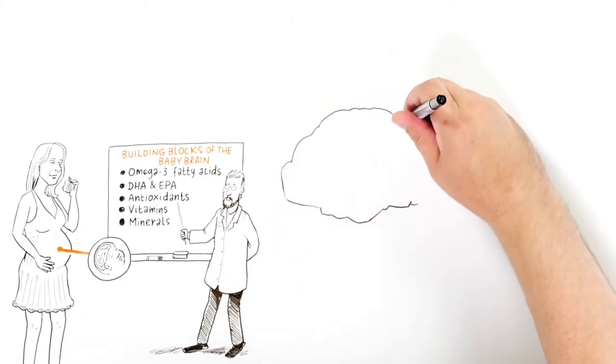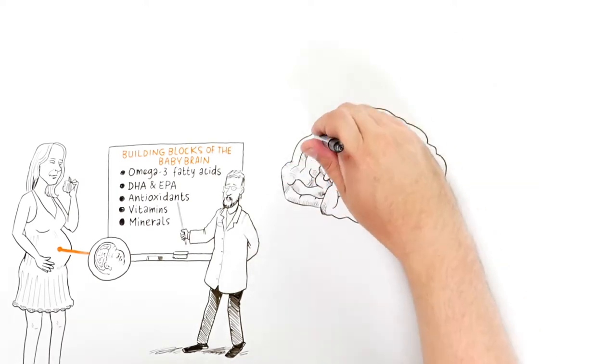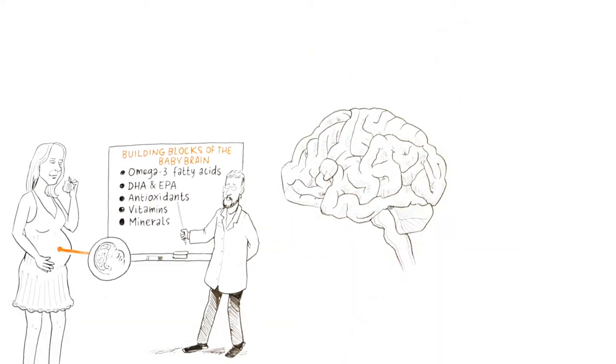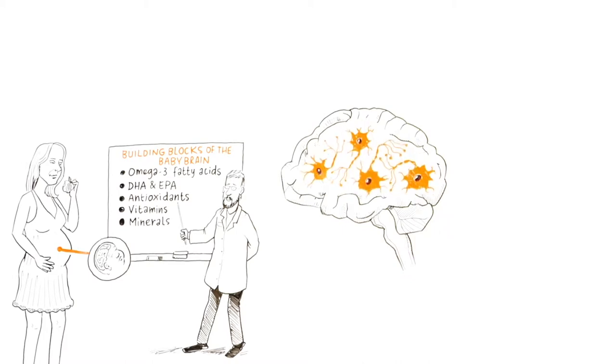DHA is responsible for making strong connections between nerve cells, the basis on which the brain functions. This enables the brain to communicate faster and more efficiently.